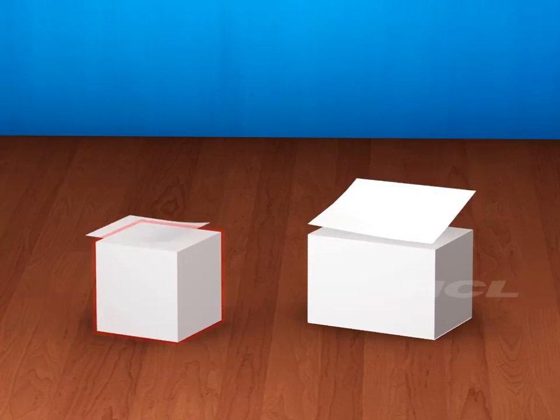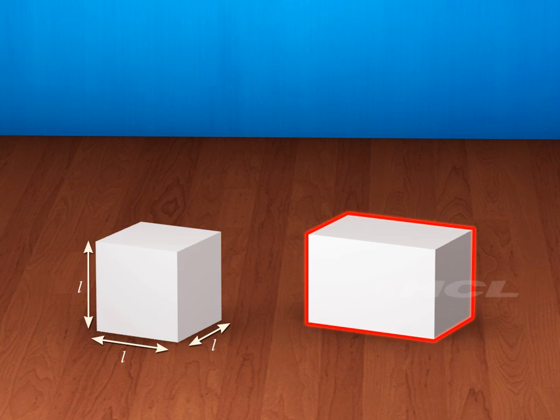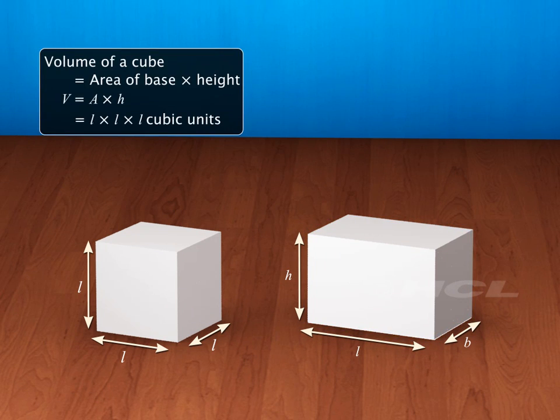As you can see, a cube is a stack of congruent squares so that the length, breadth, and height are the same. And a cuboid is a stack of congruent squares or rectangles so that at least two of the length, breadth, and height are different.